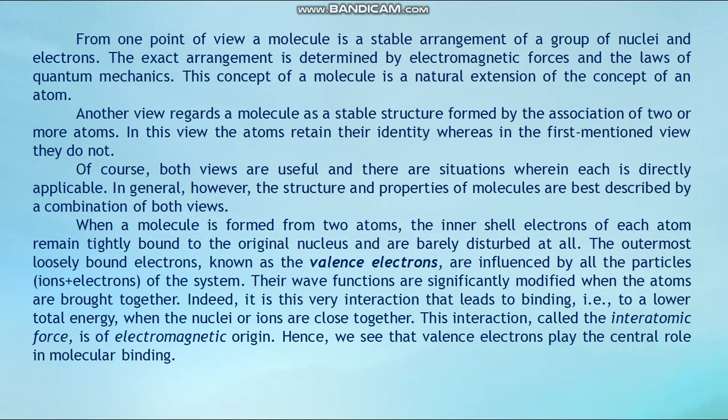From one point of view, a molecule is a stable arrangement of a group of nuclei and electrons. The exact arrangement is determined by electromagnetic forces and the laws of quantum mechanics. Another view regards a molecule as a stable structure formed by the association of two or more atoms, in which the atoms retain their identity. Both views are useful and there are situations where each is directly applicable.